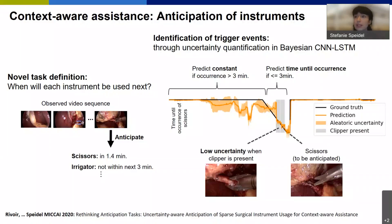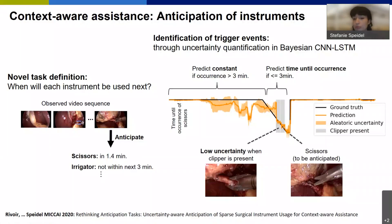We showed that the network identifies the placing of clips as a trigger event for cutting. This means the anticipated instrument is predicted within a defined time horizon of 3 minutes, and the uncertainty decreases as the event approaches. This can be used for predicting instrument usage, but ultimately we do not only want to predict instrument usage — we also want to predict complications and give advice if a complication occurs, though that requires much more training data.